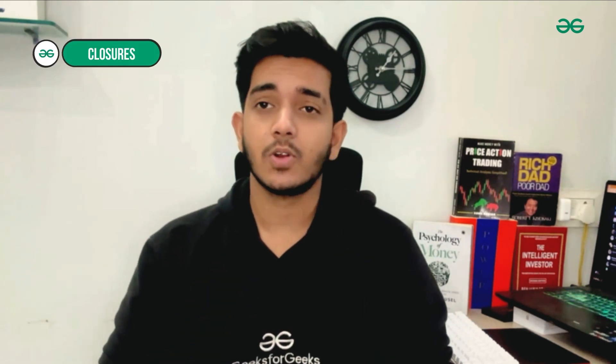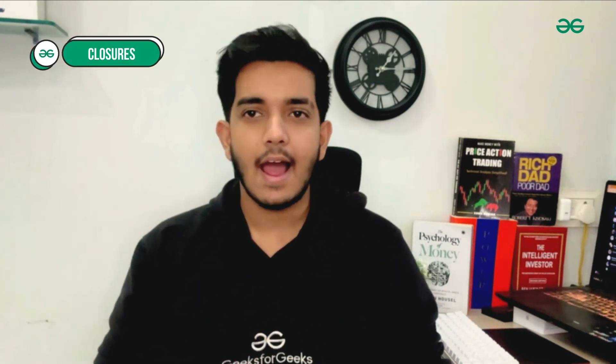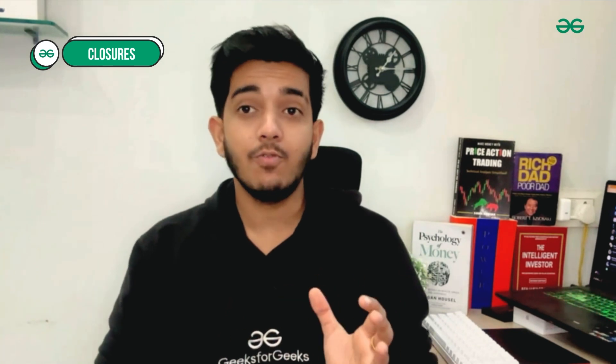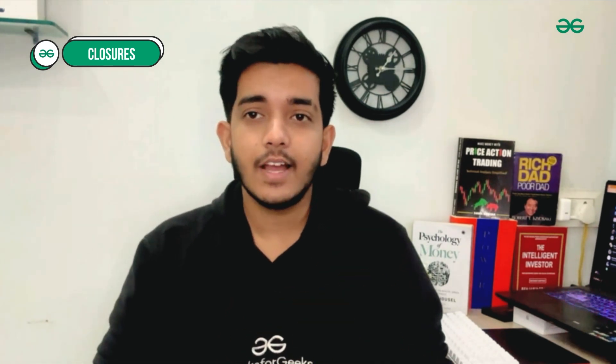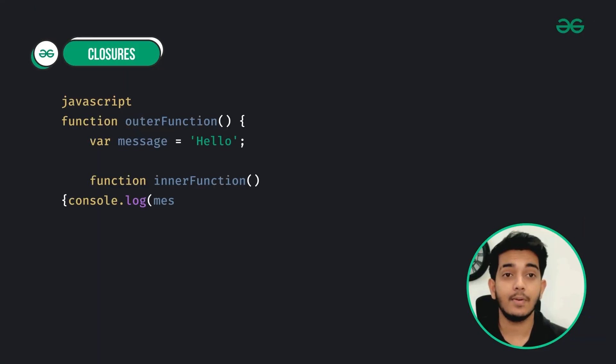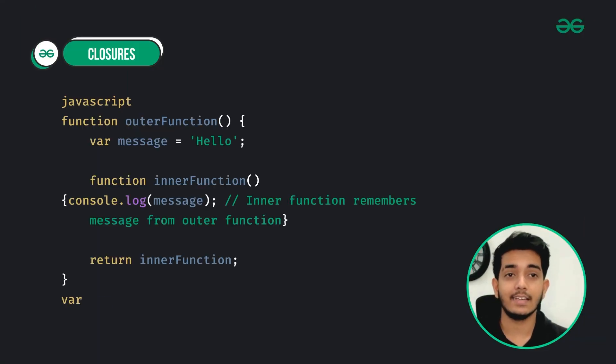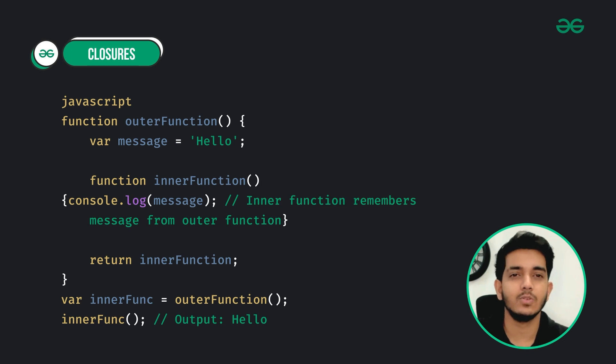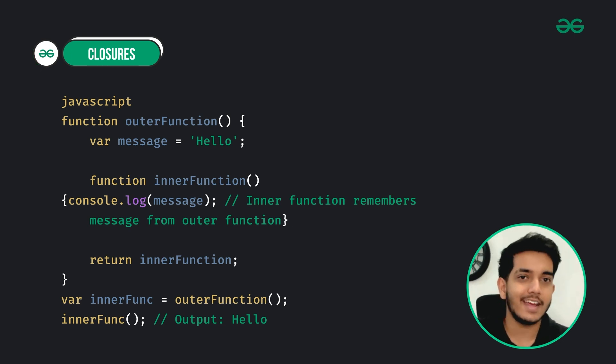The fourth concept is closures. Closures allow functions to remember variables from the scope in which they were created, even if that scope has finished executing. In this example, the inner function still has access to the message variable from the outer function, even after the outer function has finished executing.